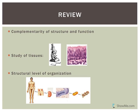Let's tie in what we're talking about today with what we've talked about in the past. Tissues are a great example of complementarity of structure and function — the design of that tissue dictates its function. Epithelial tissues are designed for secretion, absorption, and protection, while muscle tissues are designed for contraction. So the structure of those tissues helps to dictate their function.